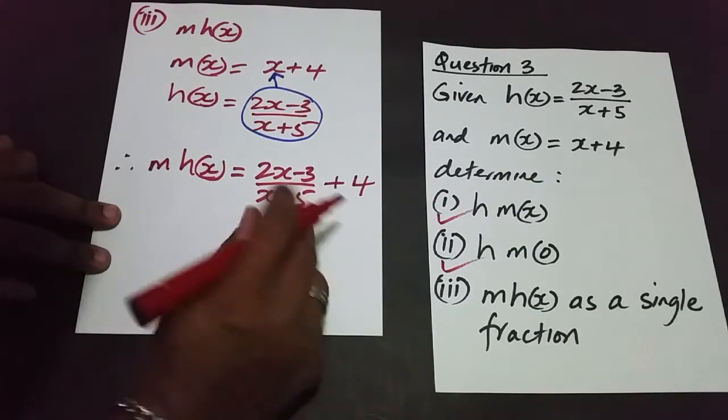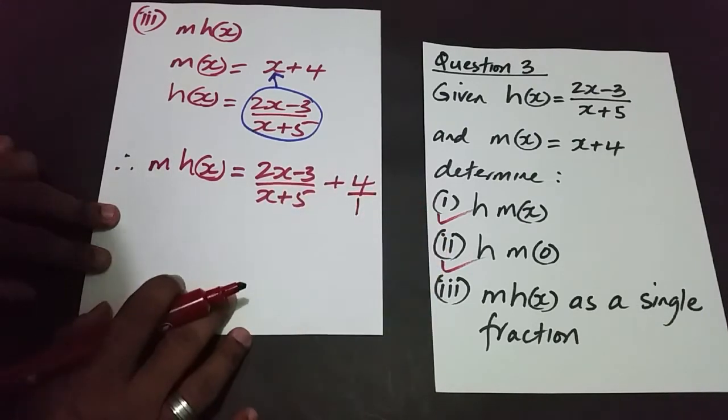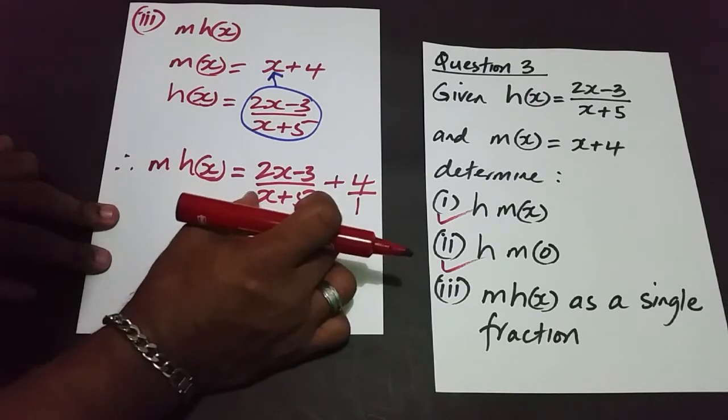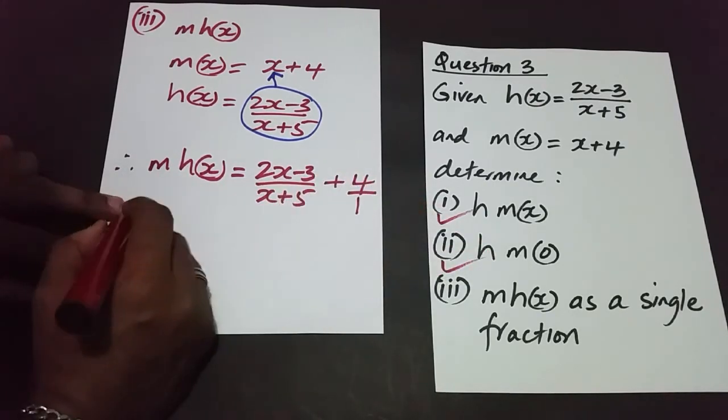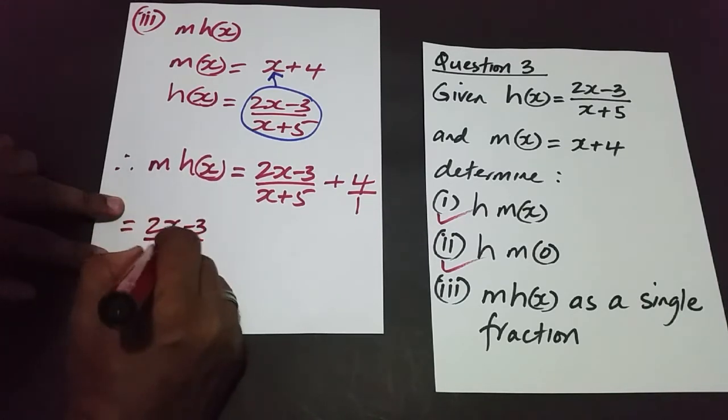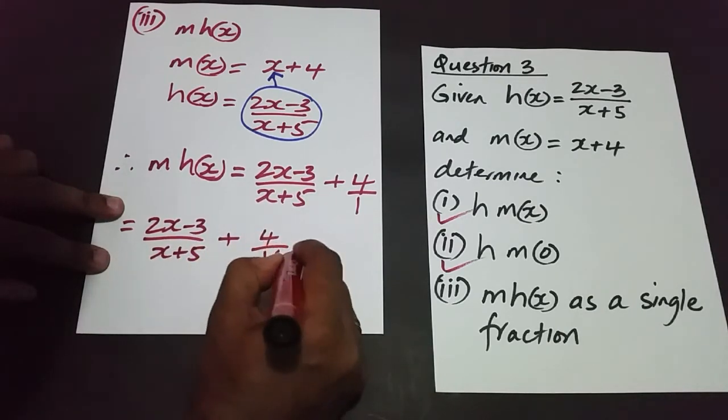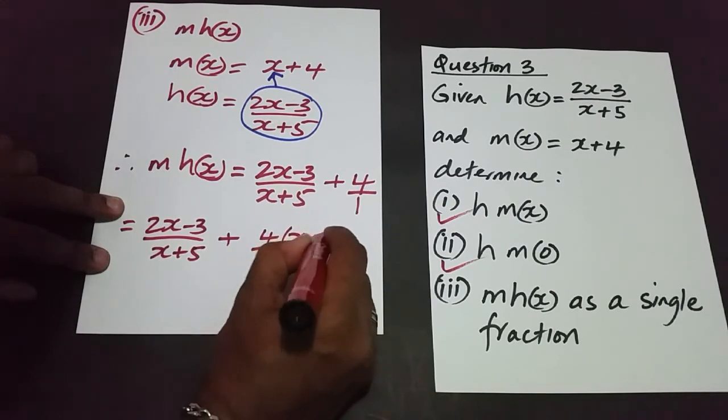Now we have to remember that 4 is the same as 4 over 1. So in this fraction here we have x plus 5, and in this fraction here we have 1, and we want to make the denominators the same. So this one is going to be untouched, but over here we're going to multiply both numerator and denominator by x plus 5.